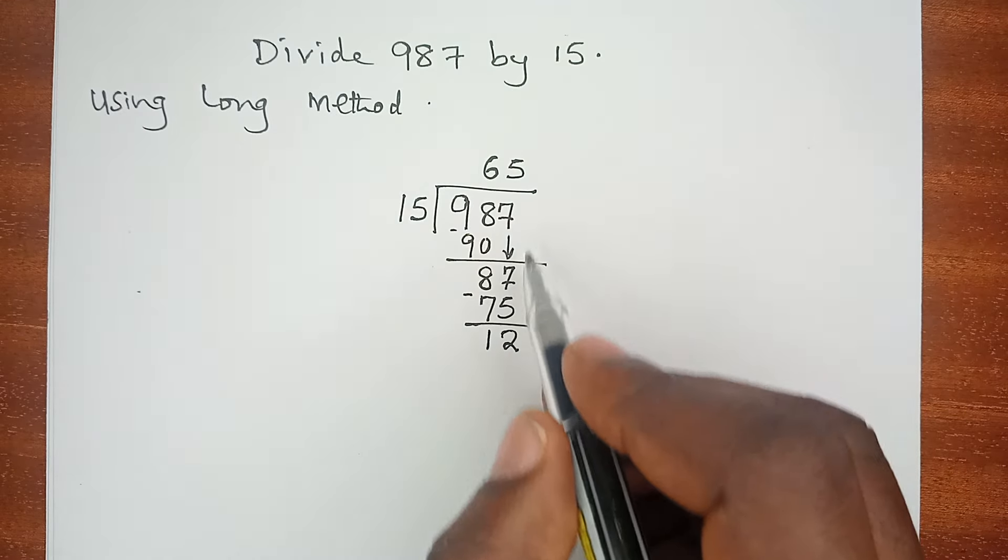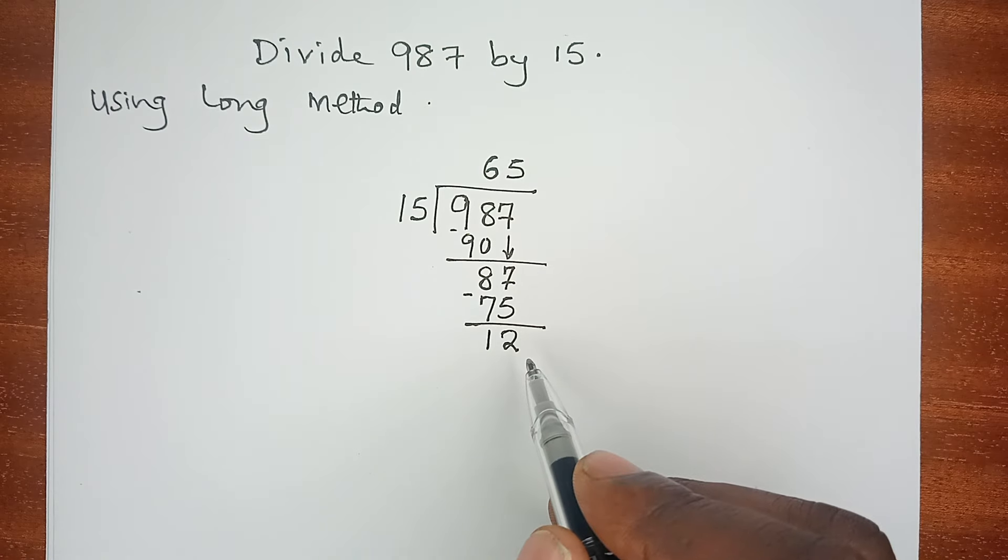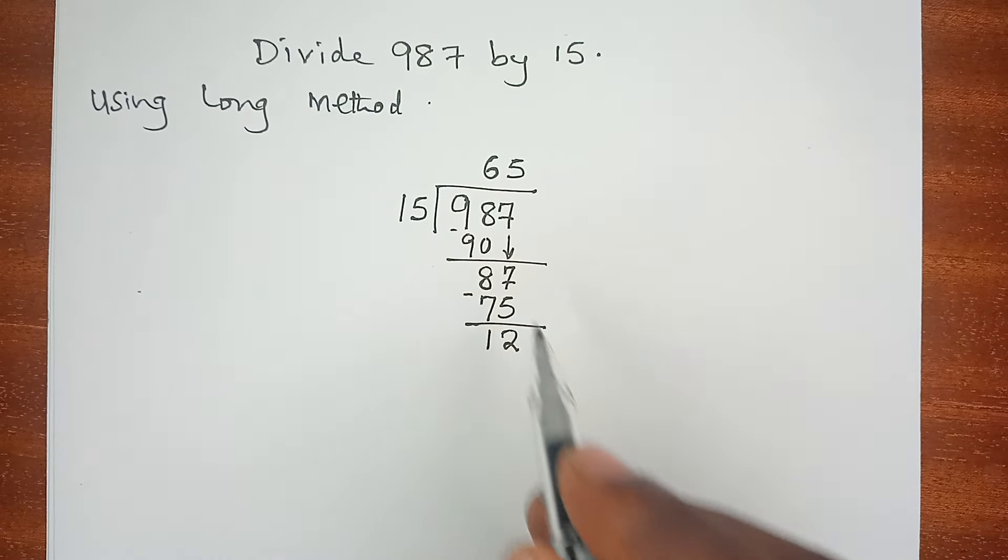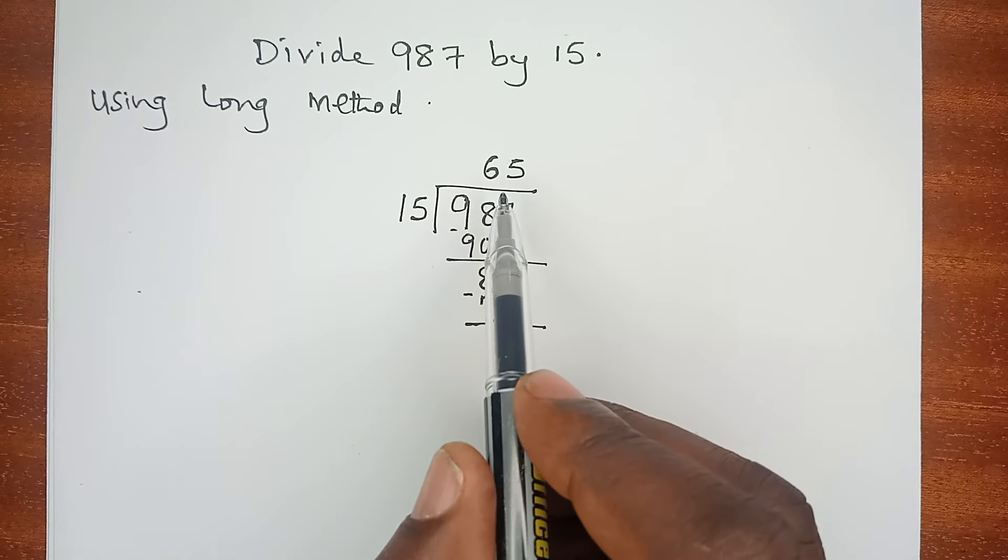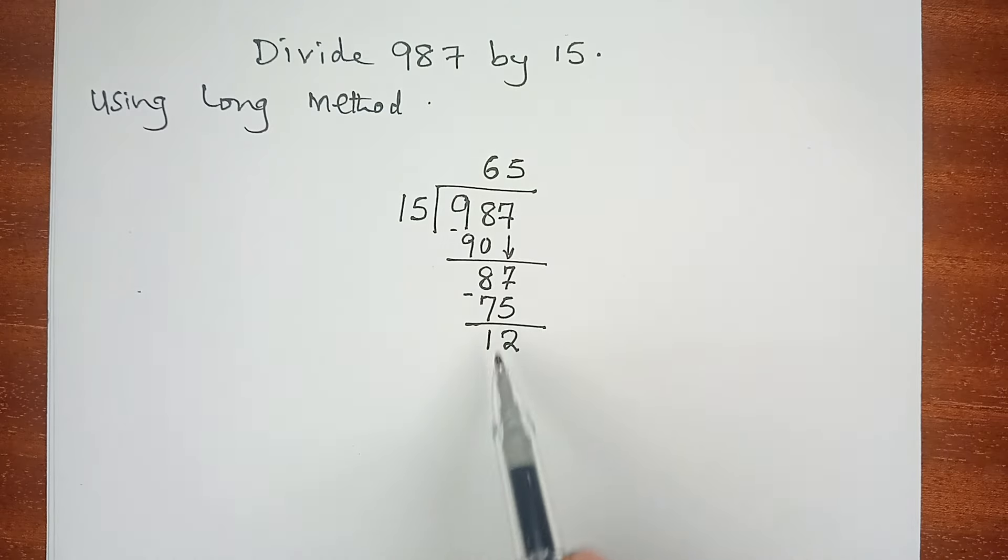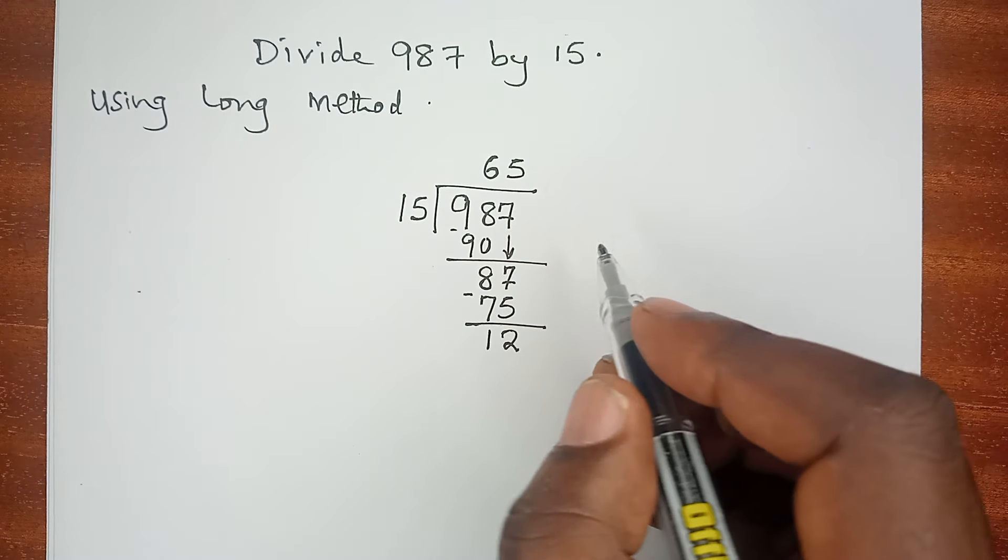Because we do not have any other digit to drop, and we realize that 15 cannot go into 12, not even a single time, then our answer remains. The answer of this question is 65 remainder 12.